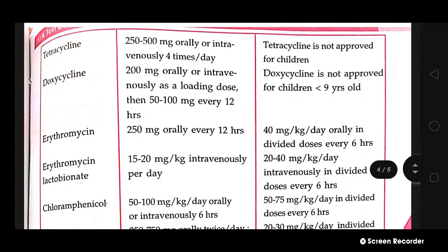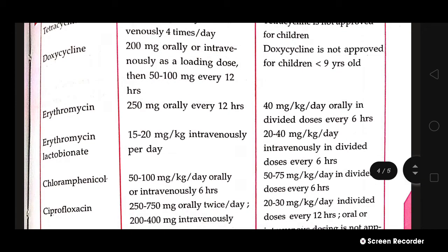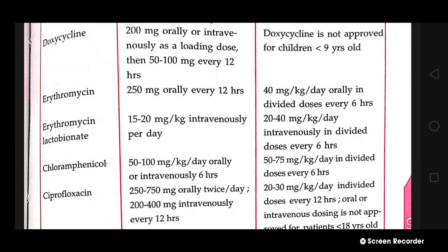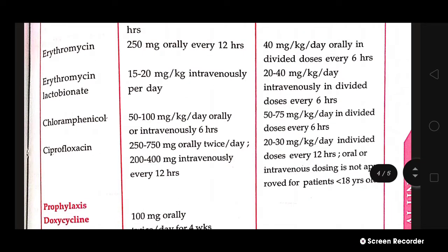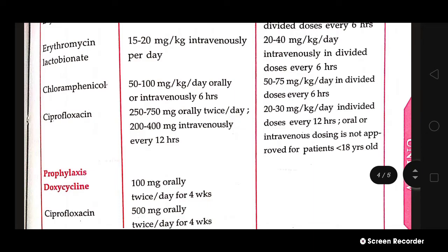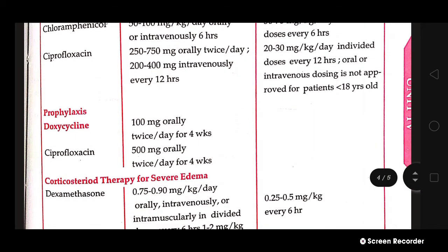Doxycycline: 200 mg orally — not given to children. Erythromycin: 250 mg orally; for children, 40 mg per kg per day. Erythromycin lactobionate: 15–20 mg per kg IV; for children, 20–40 mg per kg per day. Chloramphenicol: 50–100 mg per kg; for children, 50–75 mg per kg per day. Ciprofloxacin: 250–750 mg orally twice a day; for children, 20–30 mg per kg.